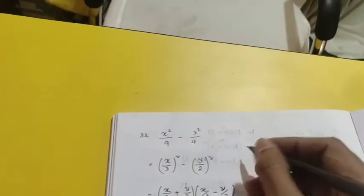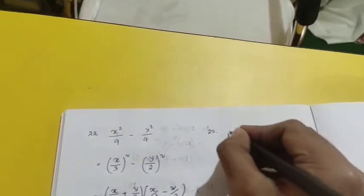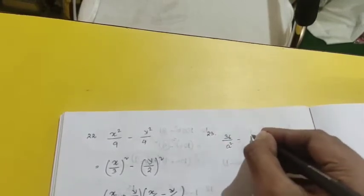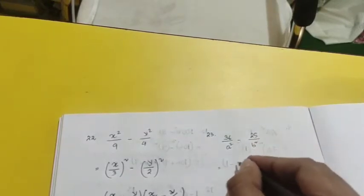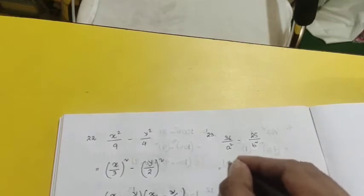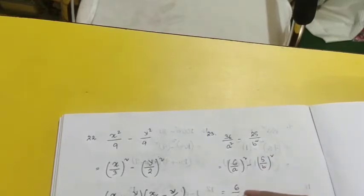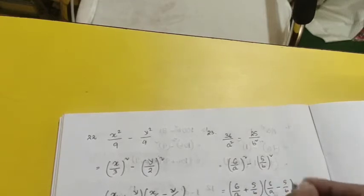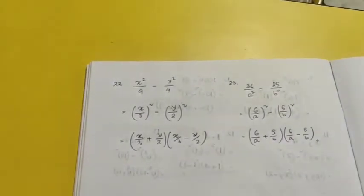Question number 23 is 36/a² - 25/b². The square root of 36 is 6, so it becomes (6/a)² - (5/b)², which is equal to (6/a + 5/b)(6/a - 5/b). That is how factorization for question 23 is done.